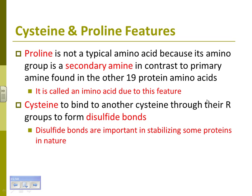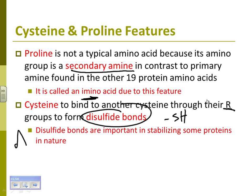Talking about the exceptions: proline is an imino acid because it has a secondary amine — that's what gives it its cyclic structure. Cysteine — its R group ends in an SH, which is going to form disulfide bonds. Make sure you know that. It's very important in stabilizing proteins in nature.